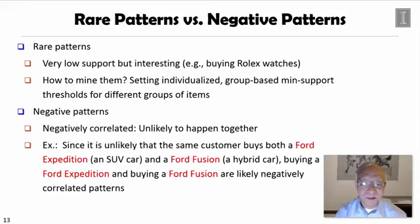For example, if you find some customer, the same customer, who buys Ford Expedition, which is an SUV car, and also a Ford Fusion, a hybrid car together, they are unlikely to happen together. So we call these patterns negative correlated patterns.